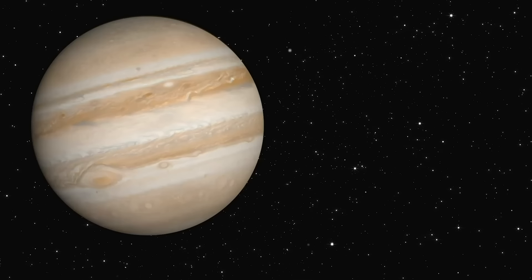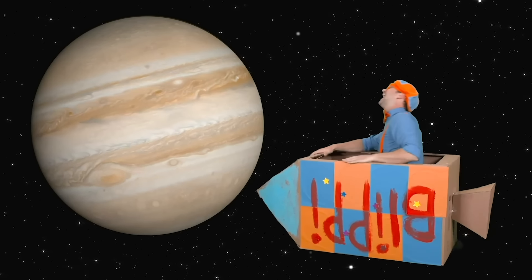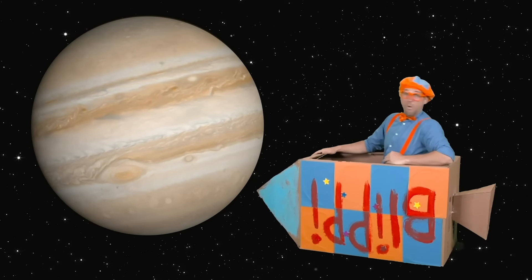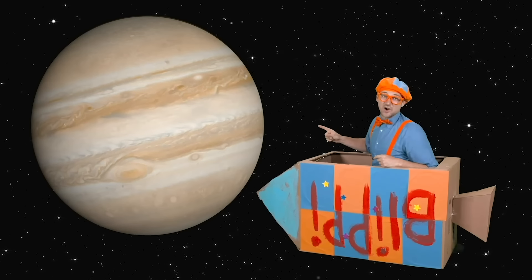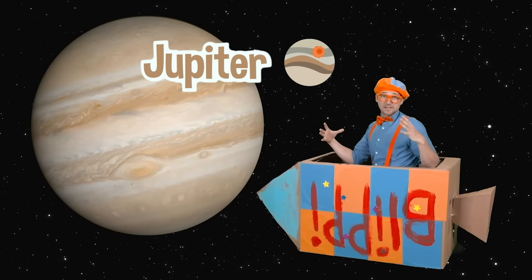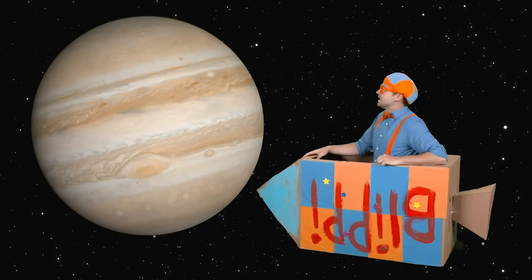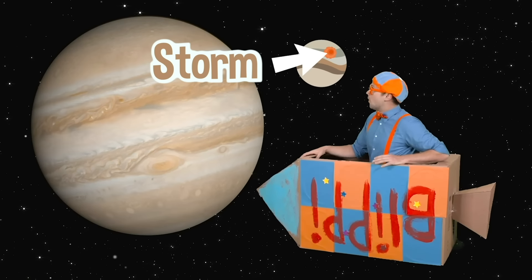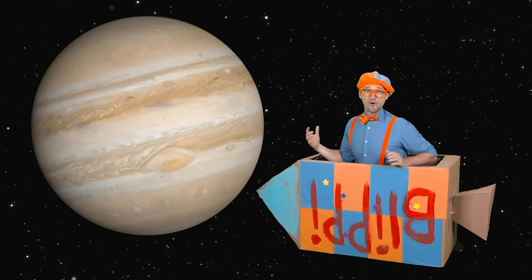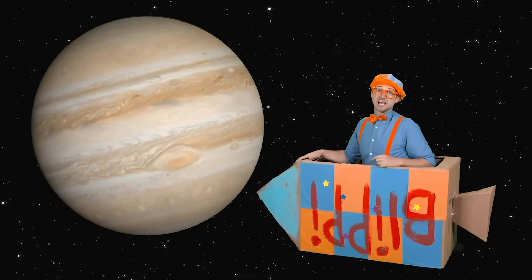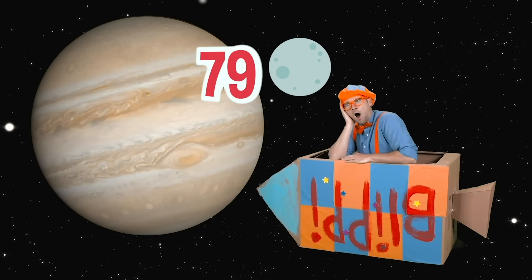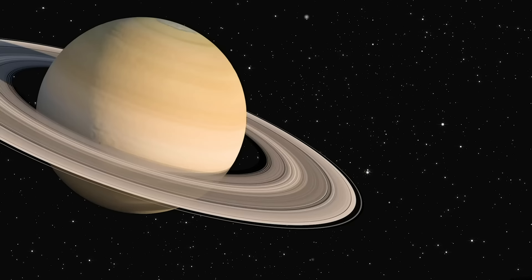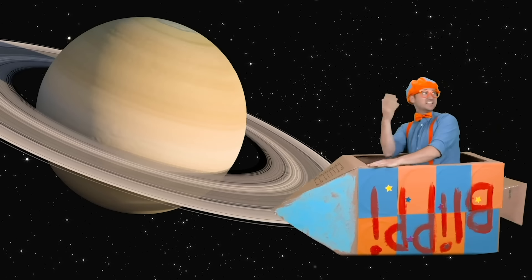That asteroid belt was so intense! And look at that! That's our planet Jupiter! It's the biggest planet in our solar system! And do you see that big red dot? That is a storm! That's a big storm! And Jupiter actually has 79 moons! That's crazy!